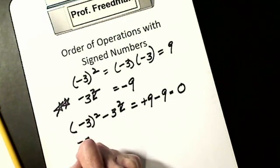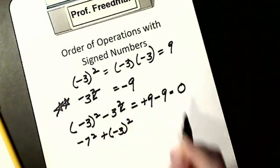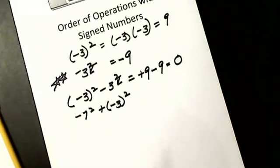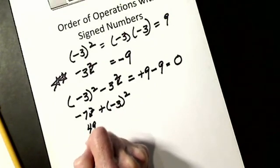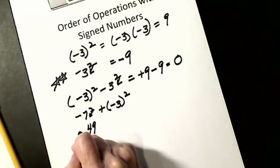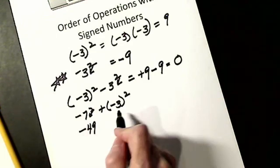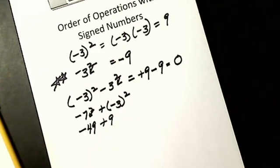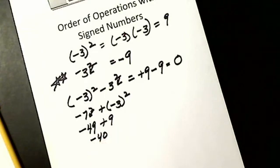Let's say I have negative 7 squared plus negative 3 squared. This is the exception: I just square the 7 and get 49, so it's negative 49. The parentheses make this a grouping symbol, so that's positive 9. I get negative 40.